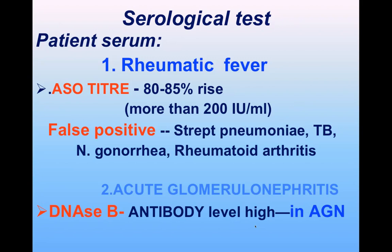Serological tests are performed for final diagnosis. In rheumatic fever, anti-streptolysin O (ASO) titers are markedly raised — 80 to 85 percent rise — with normal titer less than 200 international units per ml. False positivity can occur with Strep pneumoniae, tuberculosis, Neisseria gonorrhoeae, or rheumatoid arthritis. In acute glomerulonephritis, which follows skin infection, DNase B antibodies are markedly raised and are the diagnostic feature.